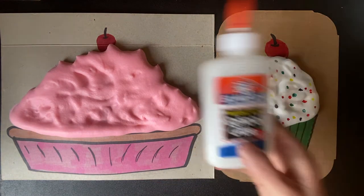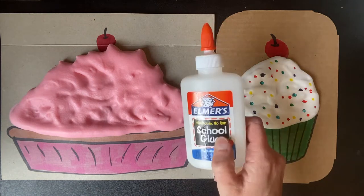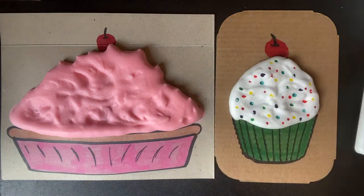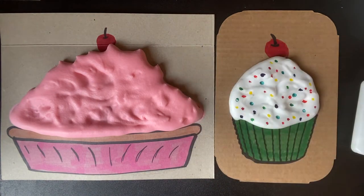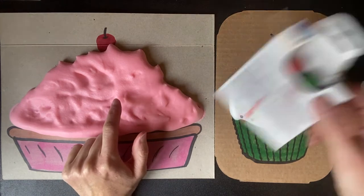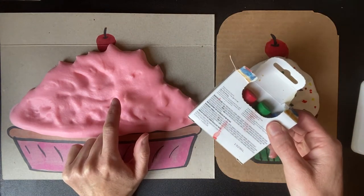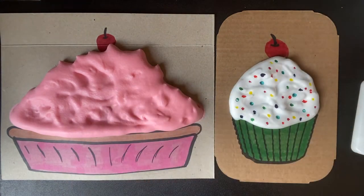You're going to need Elmer's glue, which I know you all have because it was on your school supply list. A spoon. And if you want to make it colored, you're going to need food coloring, watercolor paint, poster paint, something to color your foam.